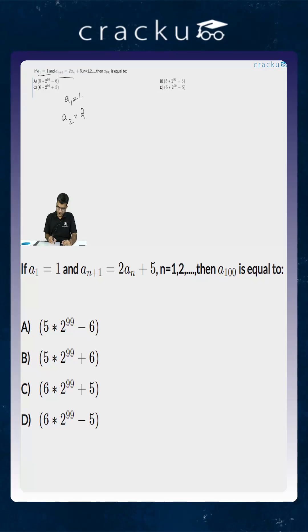A₂ will be equal to 2 plus 5. What is the value of A₃? A₃ will be equal to 2 times (2+5) plus 5. This is equal to 2² plus 2×5 plus 5, or 2² plus 3×5.